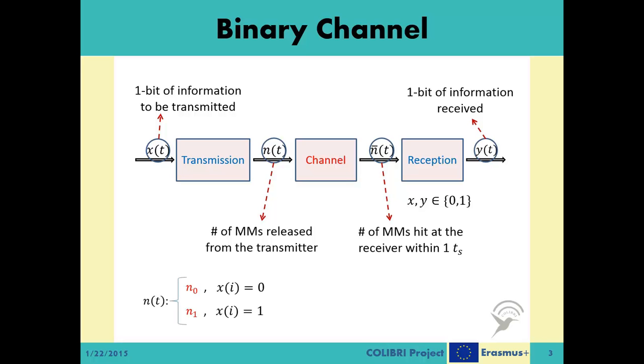In the transmission part, the transmitter decides on the value of Nt based on the current bit value of Xt, as N0 if the bit value is 0 and N1 if the bit value is 1.